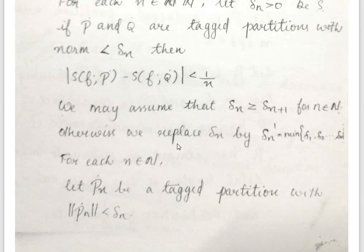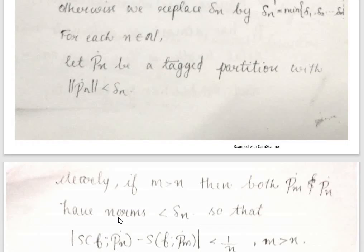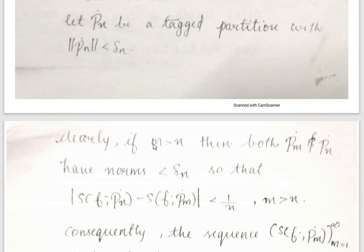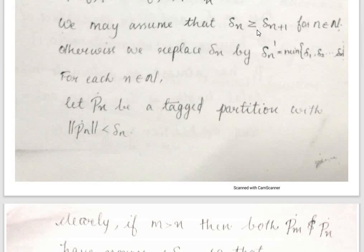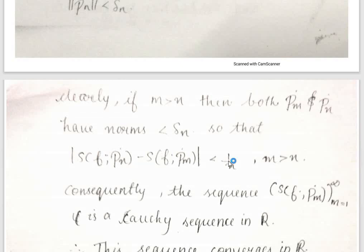If not, otherwise replace delta_n by delta_n' = minimum of {delta_1, delta_2, ..., delta_n}. For each n element of ℕ, let P_n-dot be a tagged partition with norm of P_n-dot less than delta_n. Clearly, if m > n, both P_m-dot and P_n-dot have norm less than delta_n. This is why we assume delta_n is decreasing. The sequence S(P_m-dot) for m = 1 to infinity is like a Cauchy sequence. Every Cauchy sequence in ℝ converges.